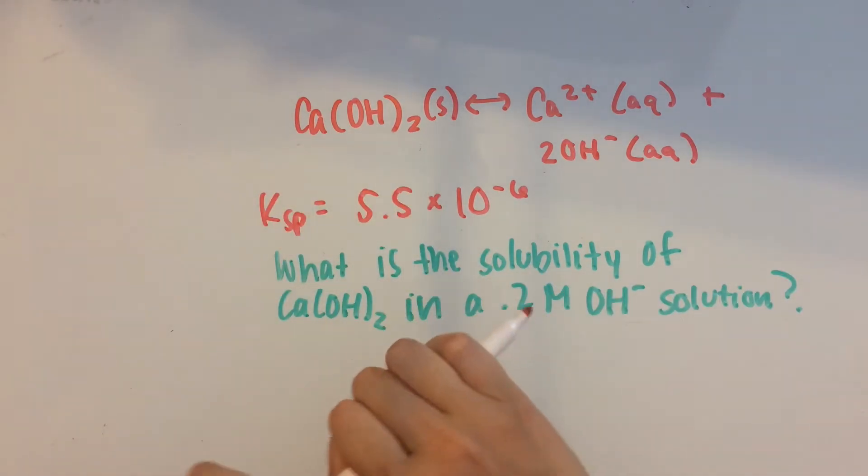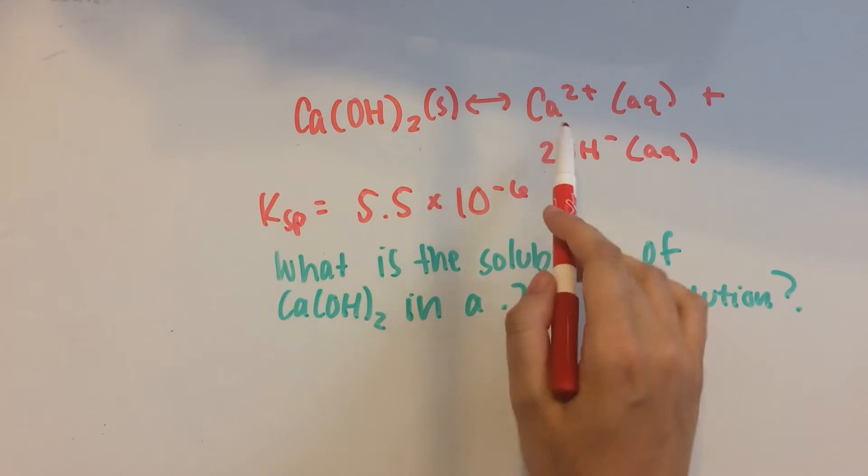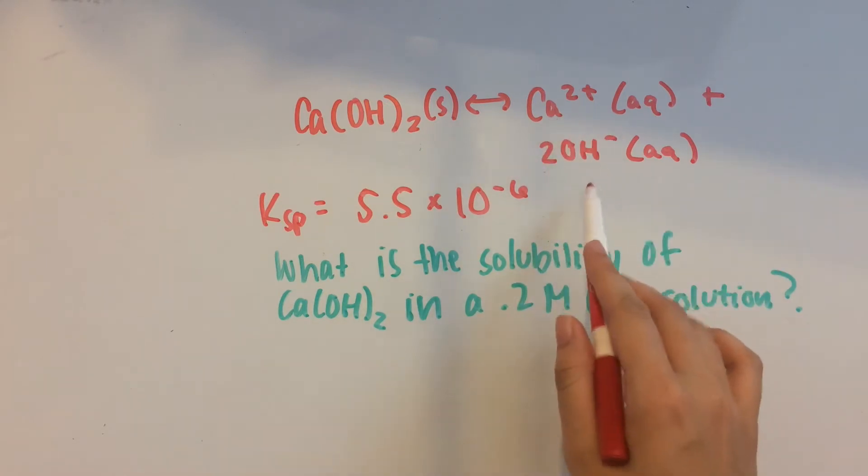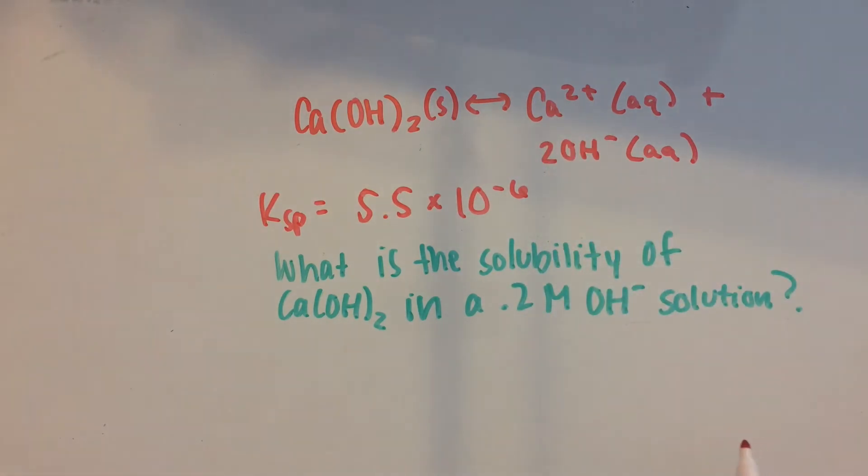So the solid in our case is Ca(OH)₂, and it dissolves into Ca²⁺ and 2 moles of OH⁻ ions. We're also given the Ksp here. The question is: what is the solubility of Ca(OH)₂ in a 0.2 molar OH⁻ solution?